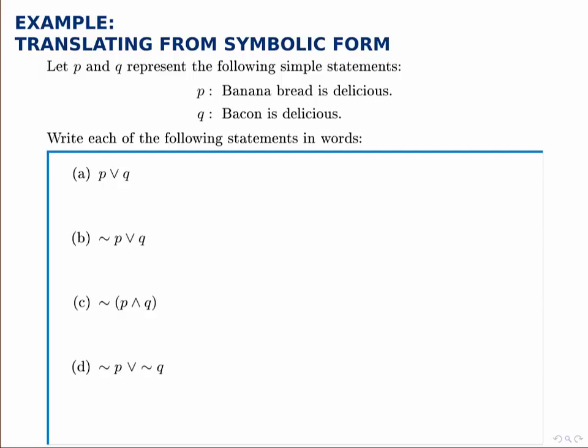In this example, we're given two statements again. P: banana bread is delicious. Q: bacon is delicious. And we're going to take each of these symbolic forms of statements and rewrite them in words. So we're translating now from symbolic form into English.